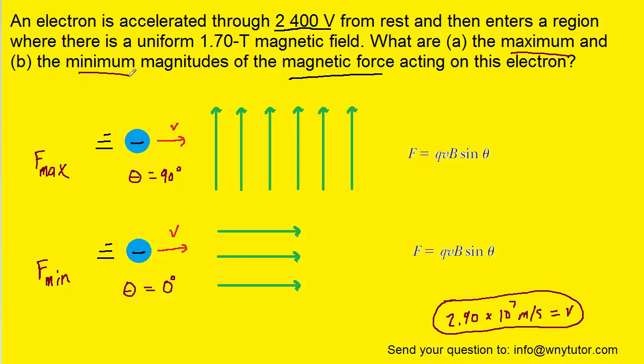Whereas the minimum force, the one for part B, exists when the angle between the velocity of the charged particle and the magnetic field is 0 degrees.